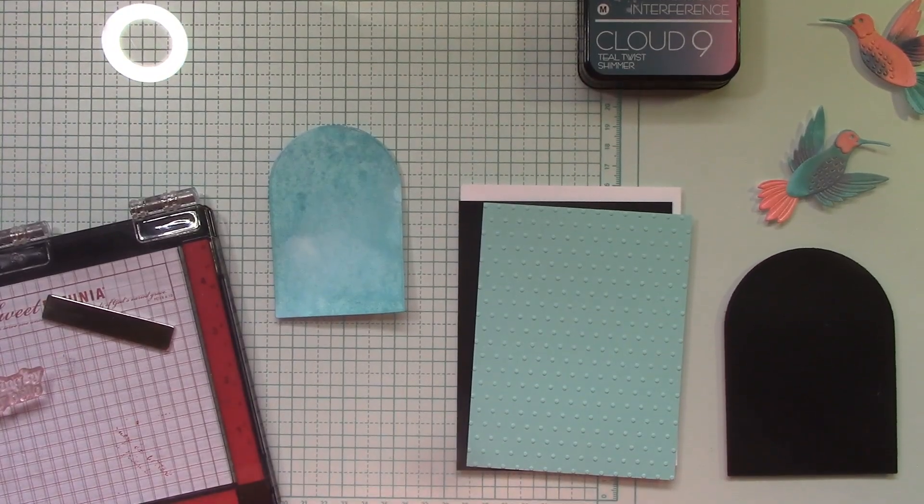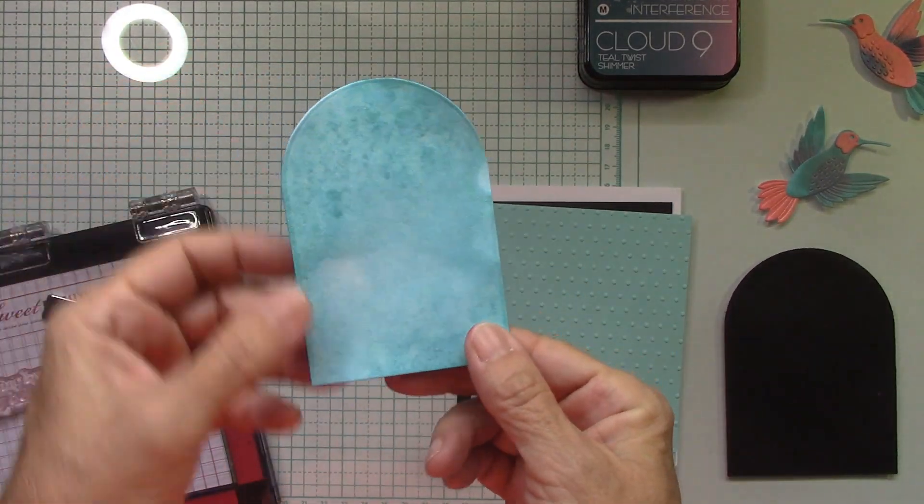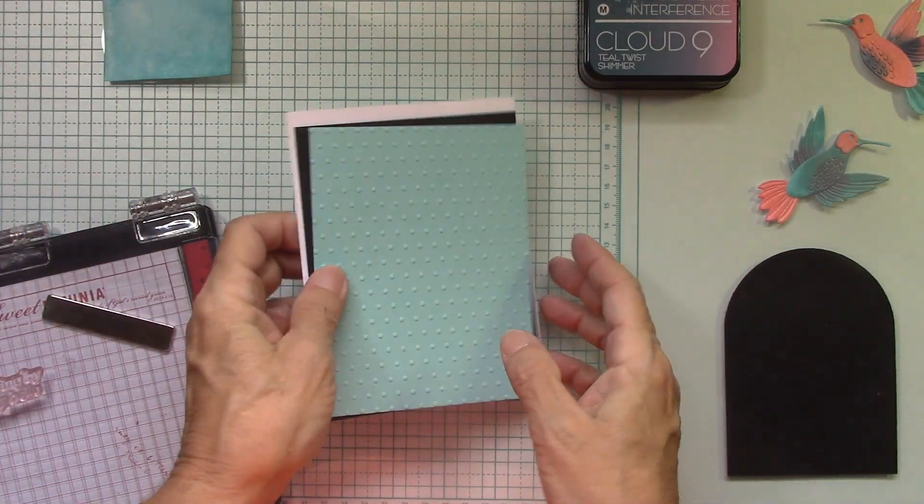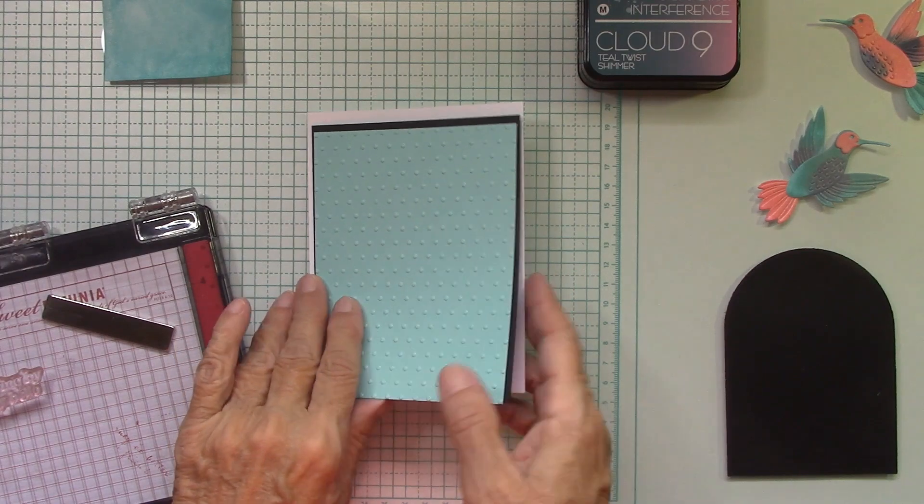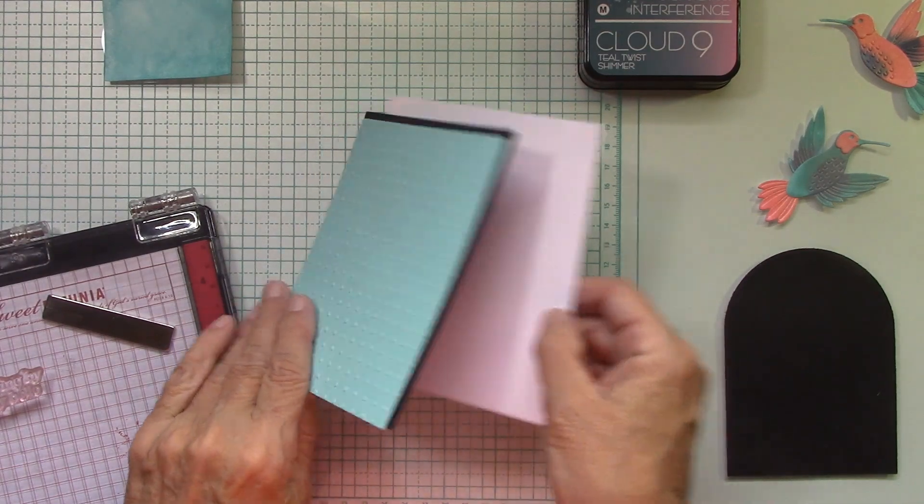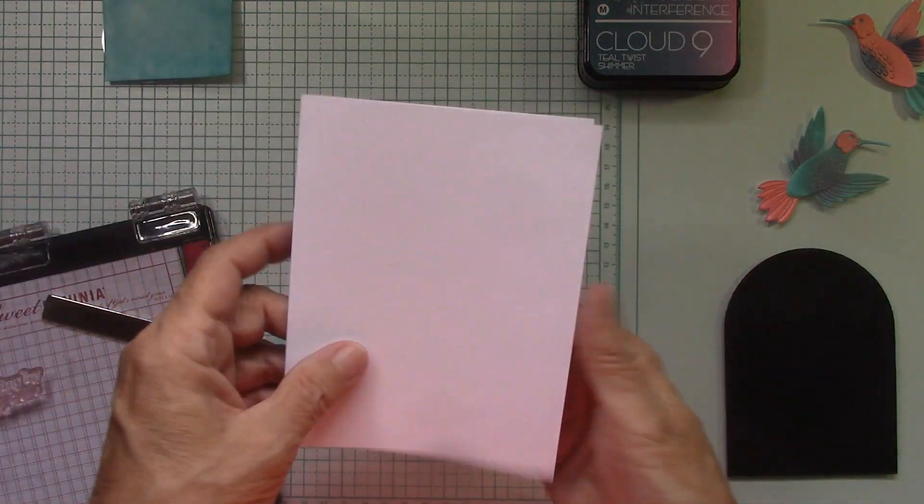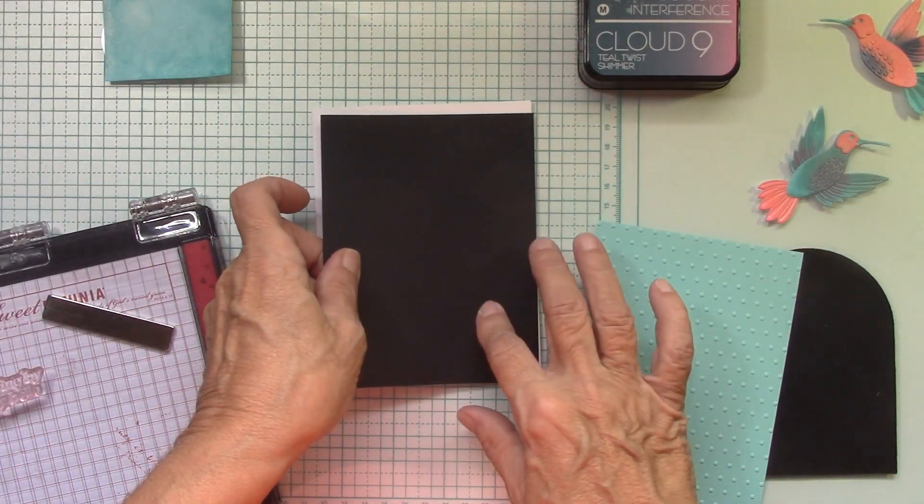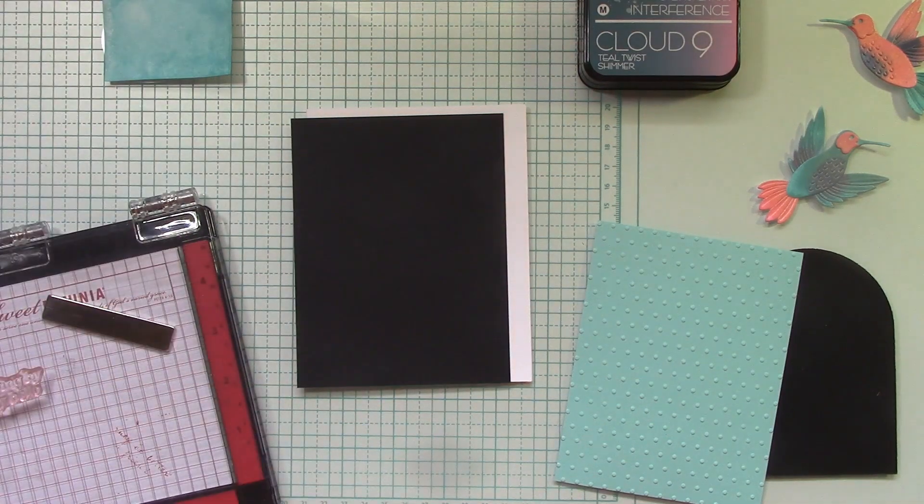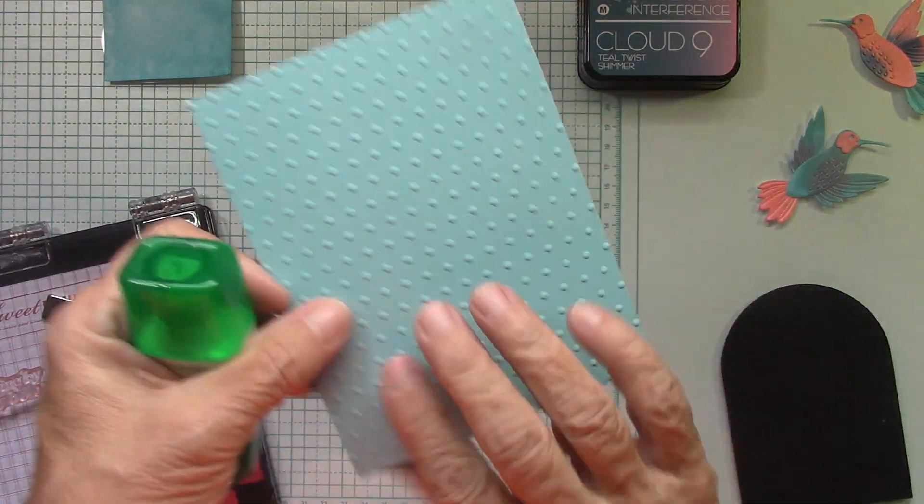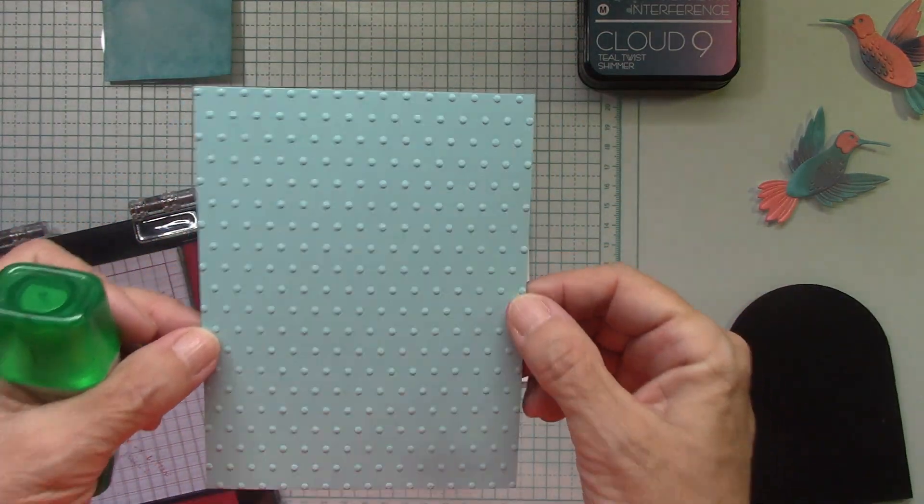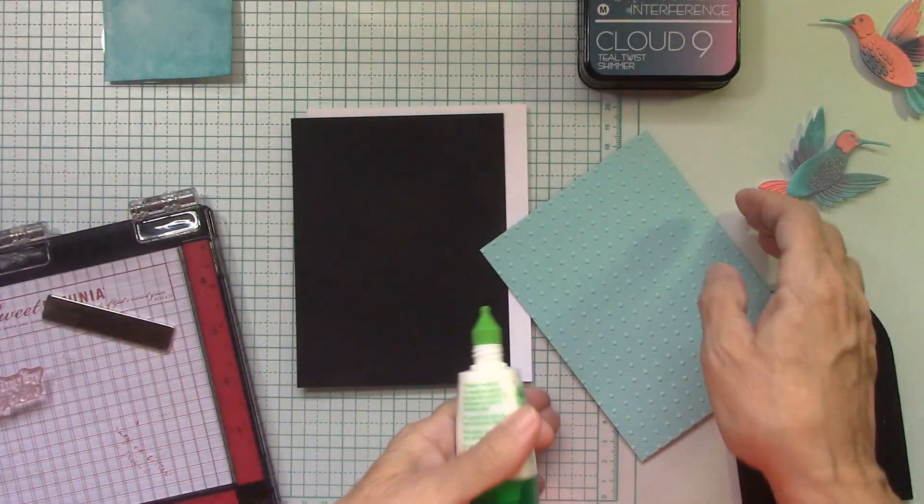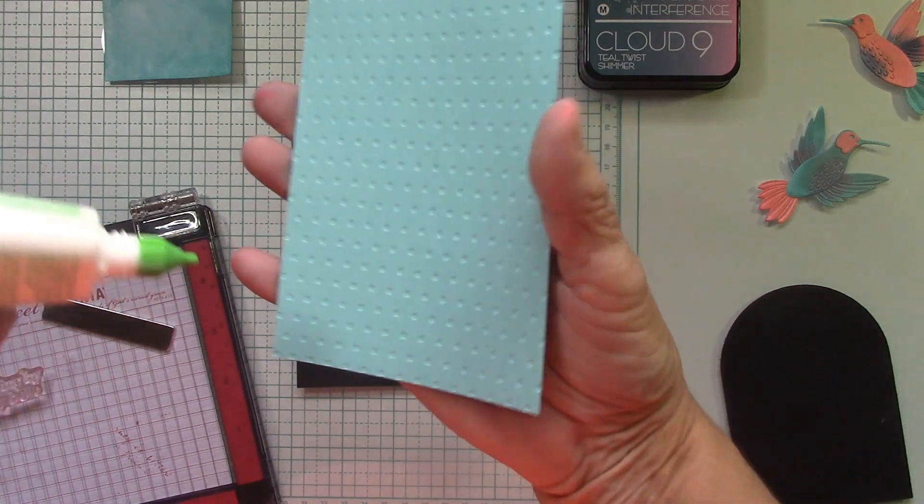Okay. So I think we're as dry as we're going to get right here and as flat as we're going to get. Looks pretty good. Now let's go ahead and start to assemble the card some. The base is eight and a half by five and a half scored at four and a quarter. This is Neenah White cardstock. I have a piece of black that's five and three eighths by four and one eighth. Excuse me. And then the piece of sea glass, Gina K that is embossed with our beautiful dots.